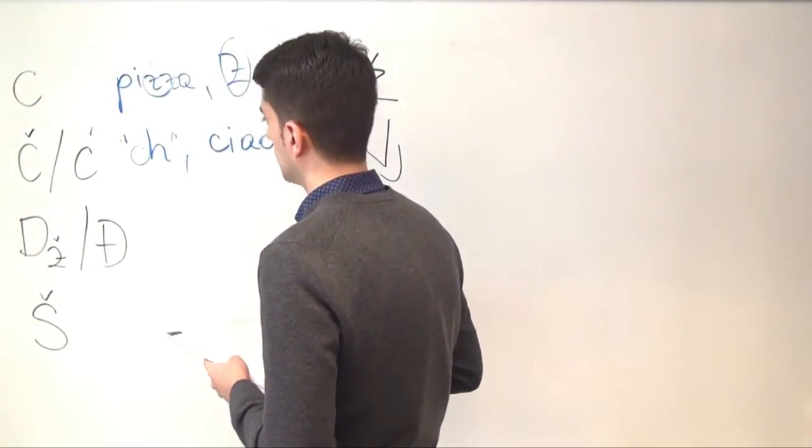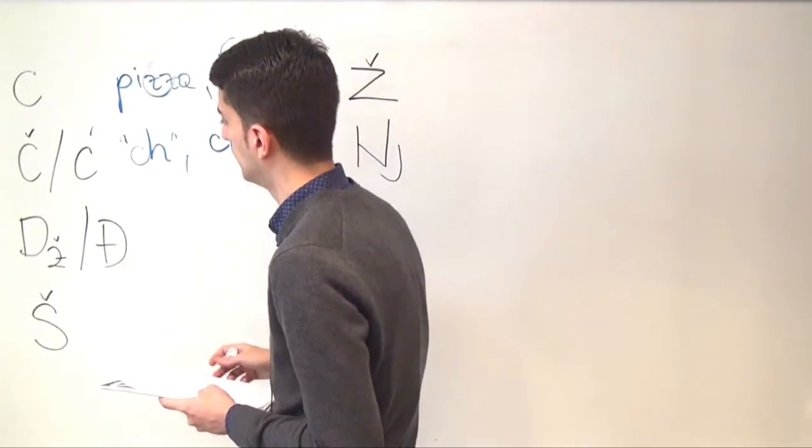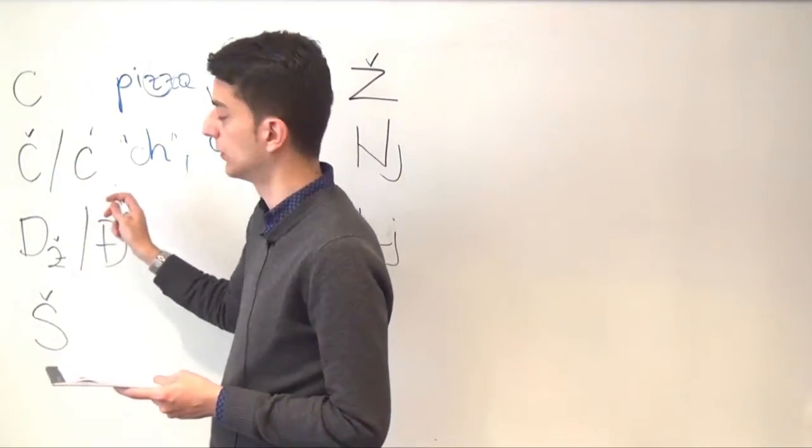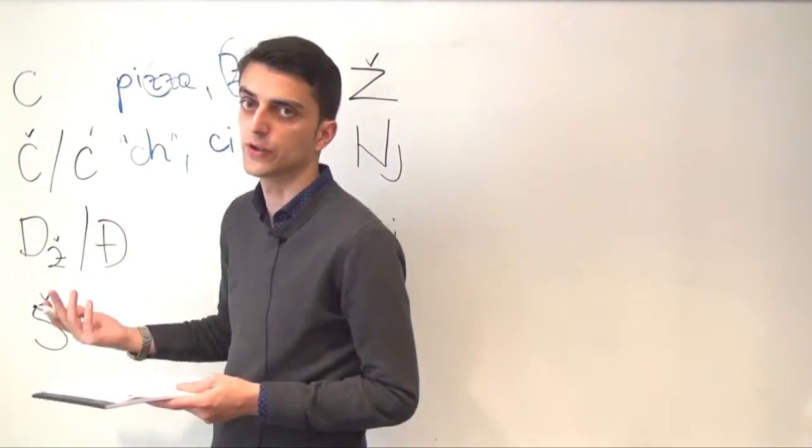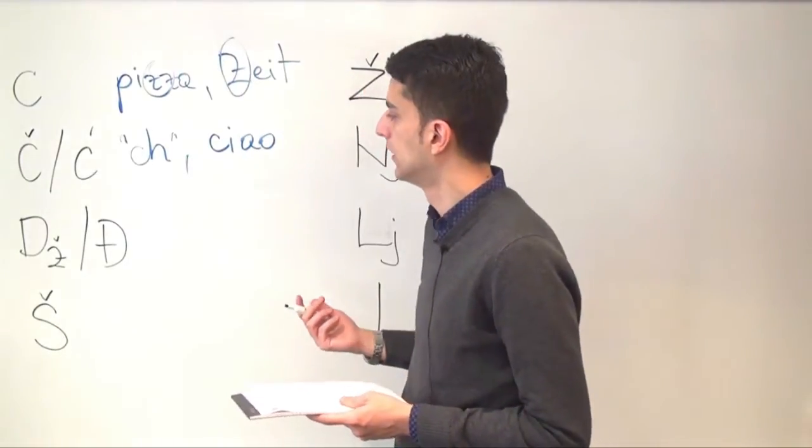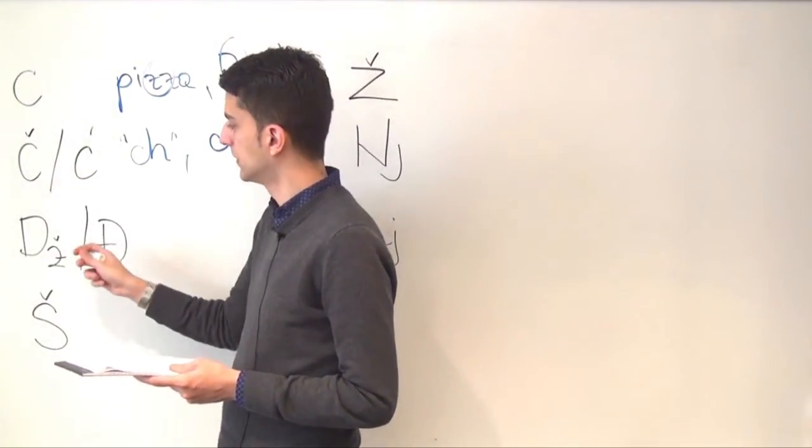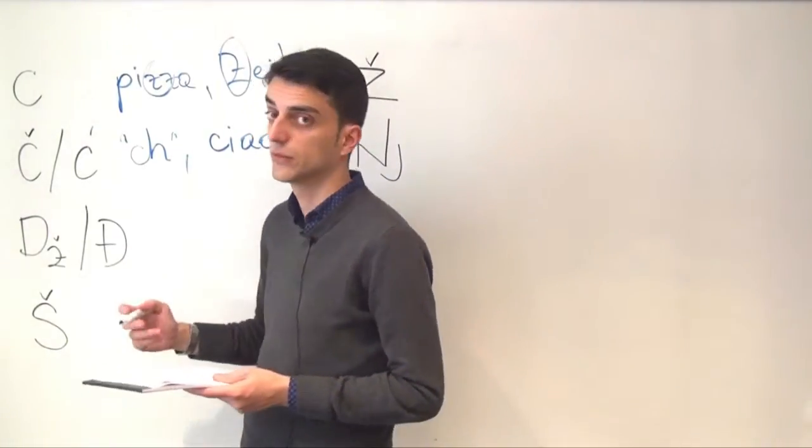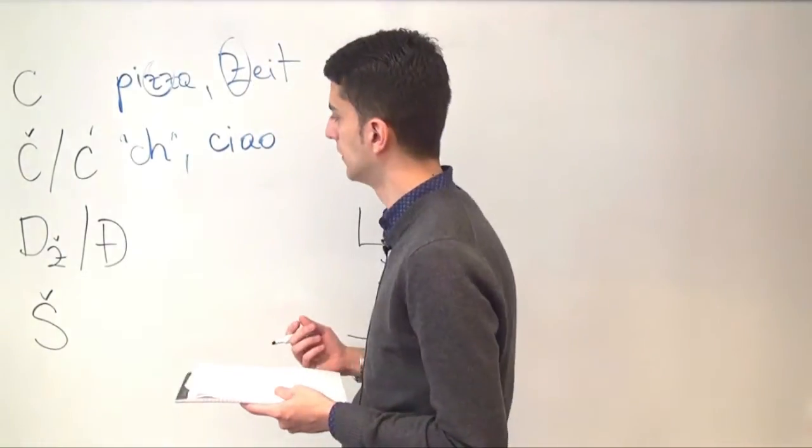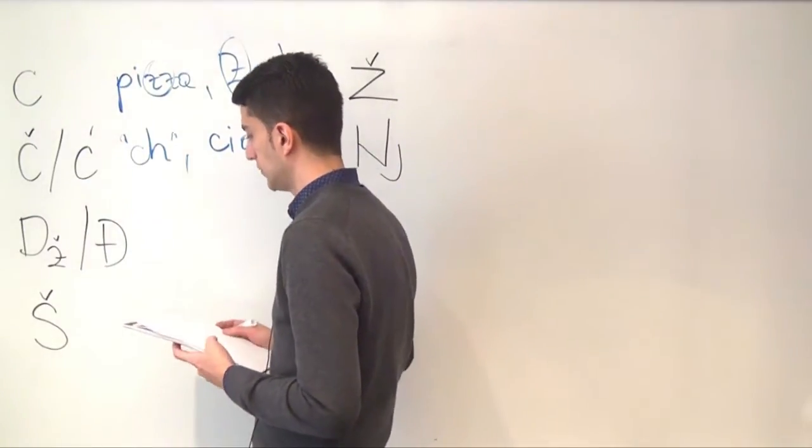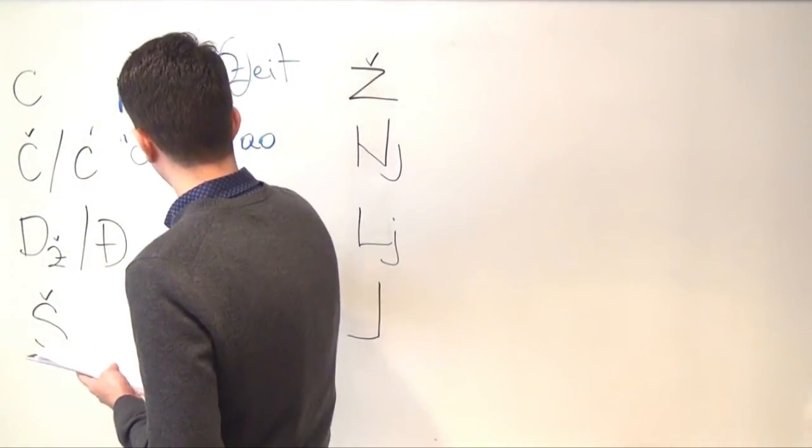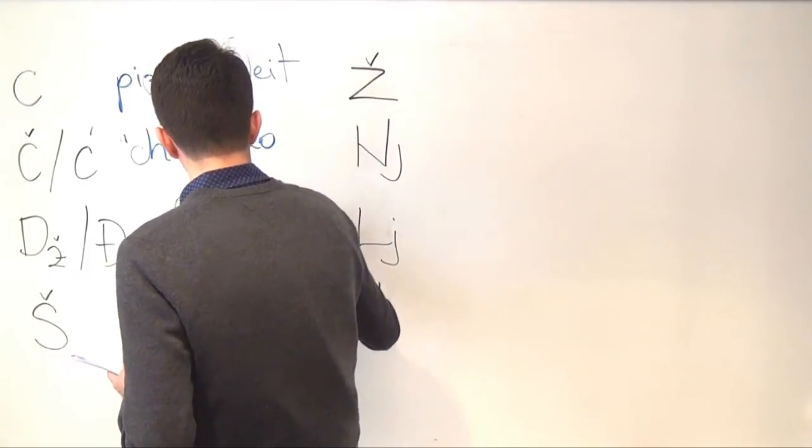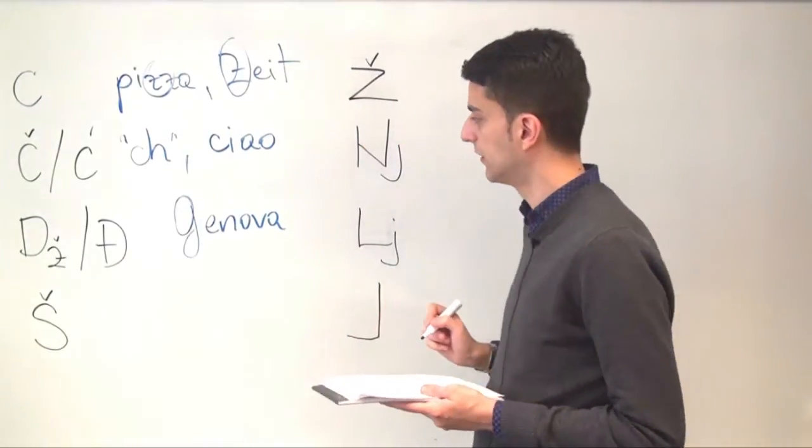So moving on to the next couple or pair. Dž and Đ like Č and Ć are difficult to differentiate if you're a non-native speaker. Dž like Č is harder sounding, harsher sounding, whereas Đ is softer sounding. So you can hear it in the Italian pronunciation of Genova which is a town in Italy.